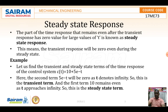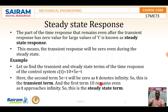As an example, let us find the transient and steady state terms of the time response C(T) = 10 + 5e^(-T). Here the second term 5e^(-T) will be 0 as T approaches infinity — so this is the transient term. The first term 10 remains even as T approaches infinity — so this is the steady state term.